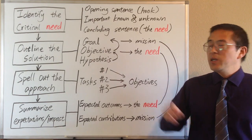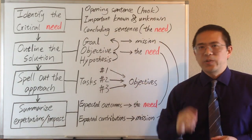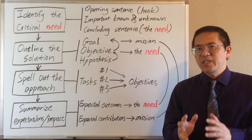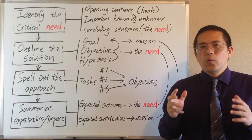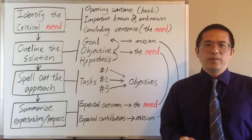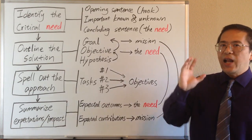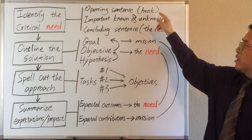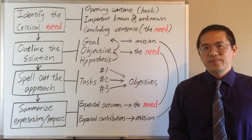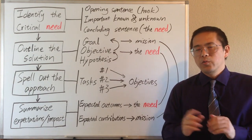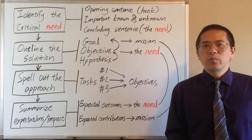Our first sentence should be a hook sentence that can immediately draw attention from an expert. And therefore, it should be specific enough. It should clearly present a problem that is well-recognized by the research community, and it should describe that problem in a way that will allow the readers to quickly connect the problem to the critical need that is identified by us. Therefore, we do not want to bore our readers or delay their understanding by reiterating common background knowledge that everybody knows.